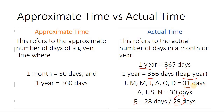Note that we have 31 days for the months of January, March, May, July, August, October, and December. And we have 30 days for the months of April, June, September, and November. For the month of February, it is 28 days if it's not a leap year, and it becomes 29 days if it is a leap year. That's the perspective of approximate time and actual time.